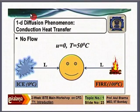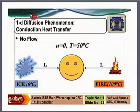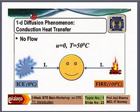Let us try to understand these concepts through an example. Suppose you are standing in between ice at 0°C and fire at 100°C, exactly in the middle. Assuming heat transfer is one-dimensional in the x-direction and there is no flow, the temperature you experience is (0 + 100)/2 = 50°C, because you are standing exactly in the middle and have equal effect of ice and fire. This is diffusion transport — pure conduction phenomenon.